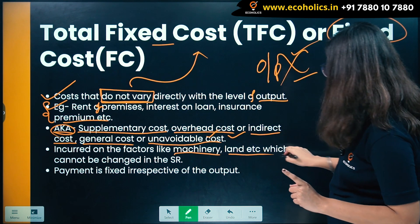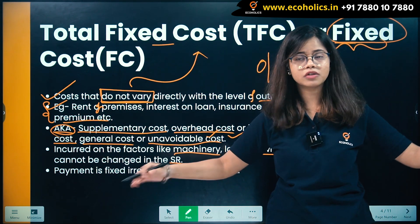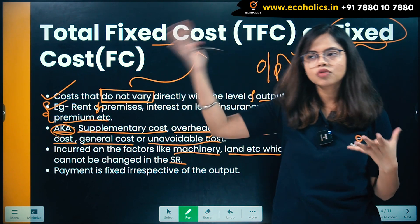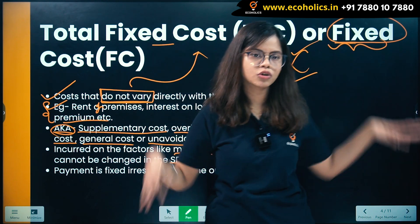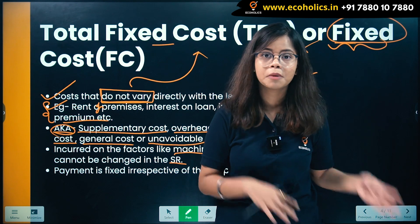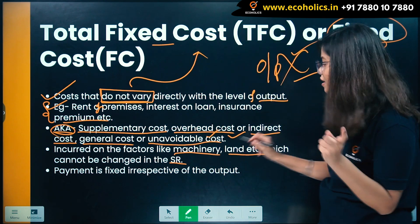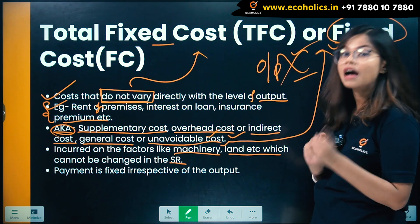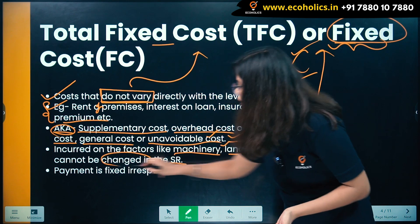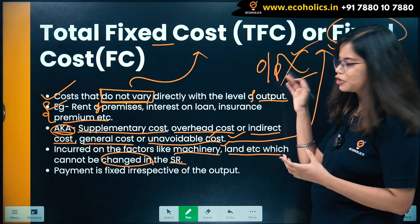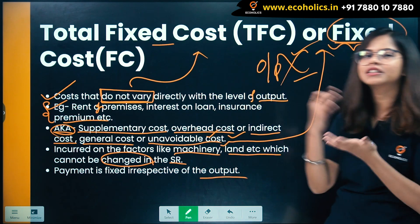Fixed cost is incurred on factors like machinery and land which cannot be changed in the short run. For example, in big industries, machinery cannot be imported and set up urgently when you need to increase production, because the time period is very short. So machinery and land are fixed costs — they cannot be changed in the short run.